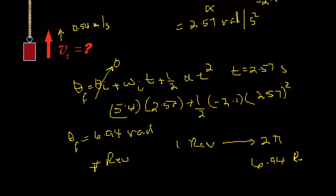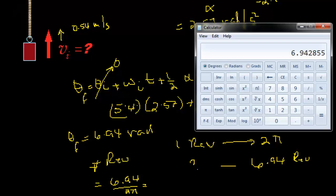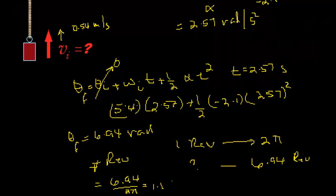6.94 revolutions. Cross multiplication. Number of revolutions equals 6.94 divided by 2 pi. We have 6.94 divided by 2 times pi. Now, that equals 1.1 revolutions.